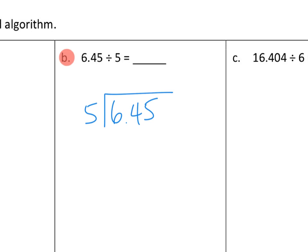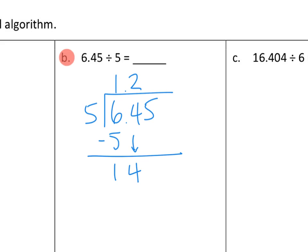We start with our biggest units — the ones. We've got six ones dividing into five groups. We put one in every group, using up five of our ones, leaving one one remaining. When we pull down the four tenths, we now have 14 tenths to divide. Dividing 14 tenths equally across five groups, we put two in every group, using up ten tenths, leaving us with four tenths remaining.